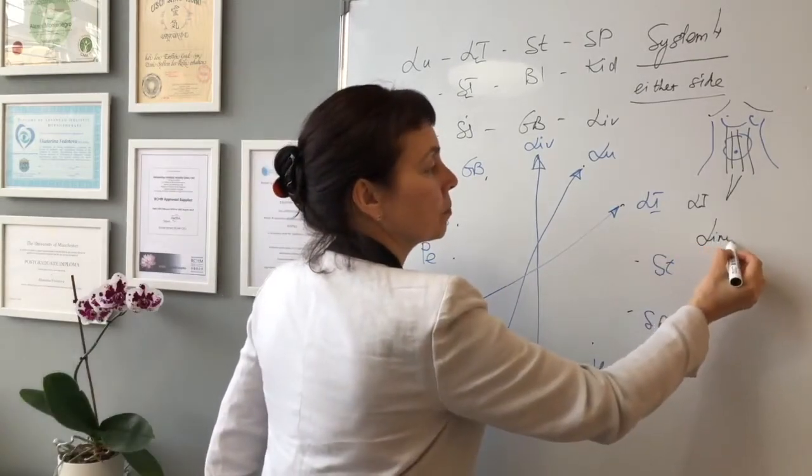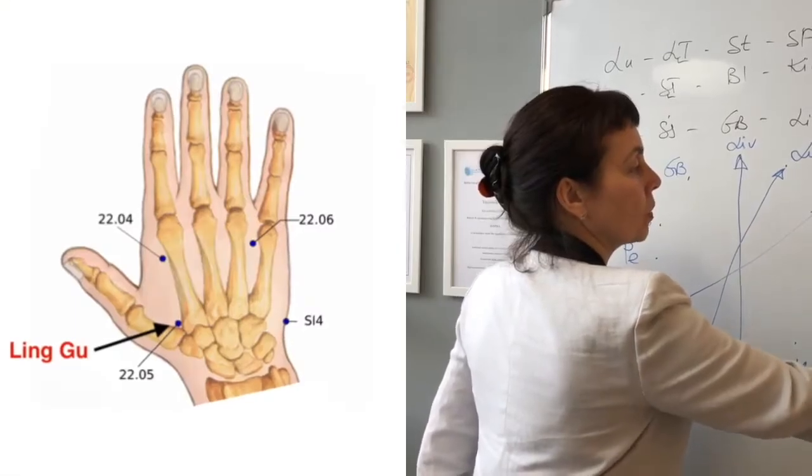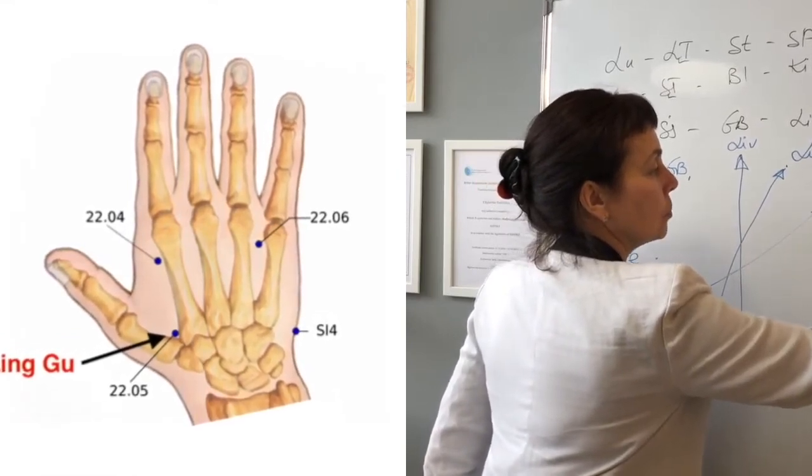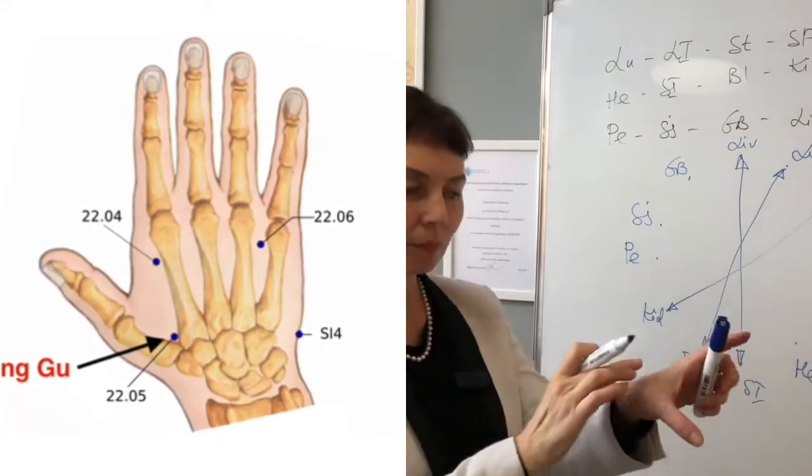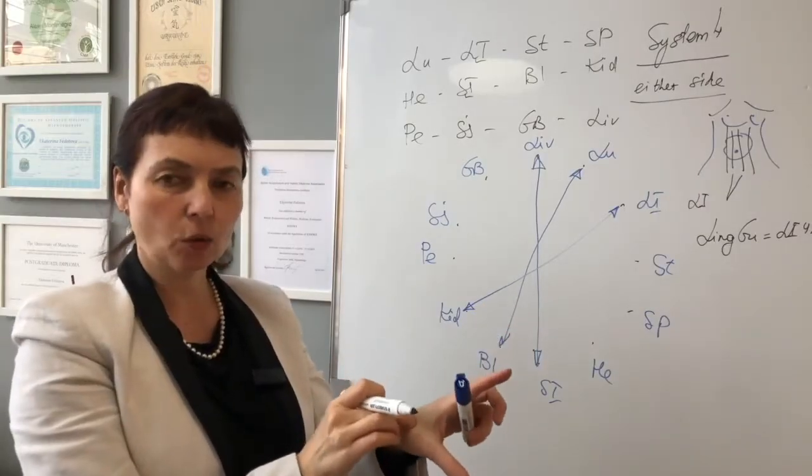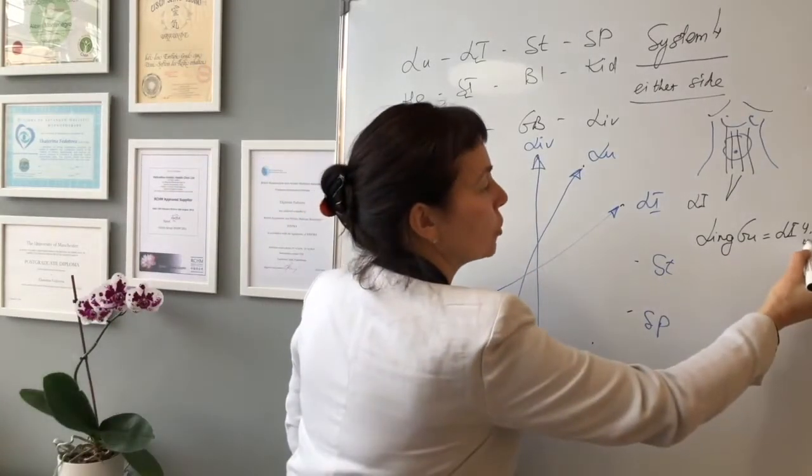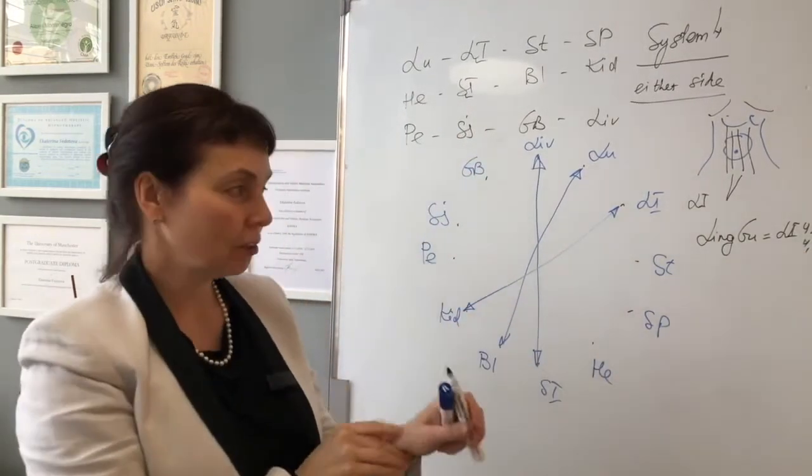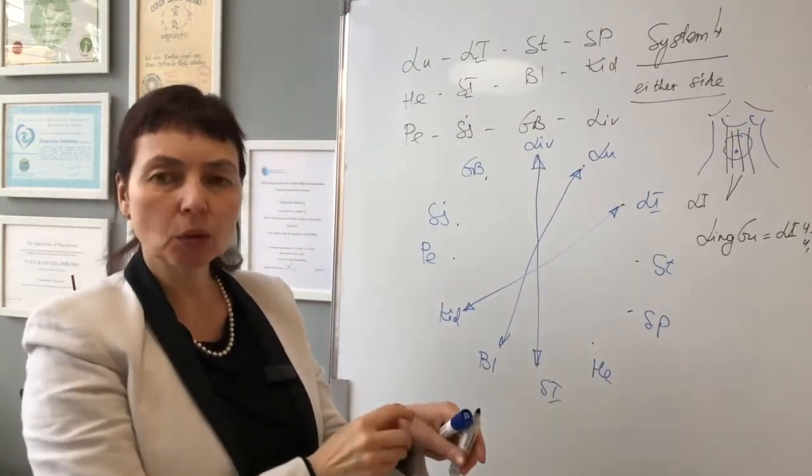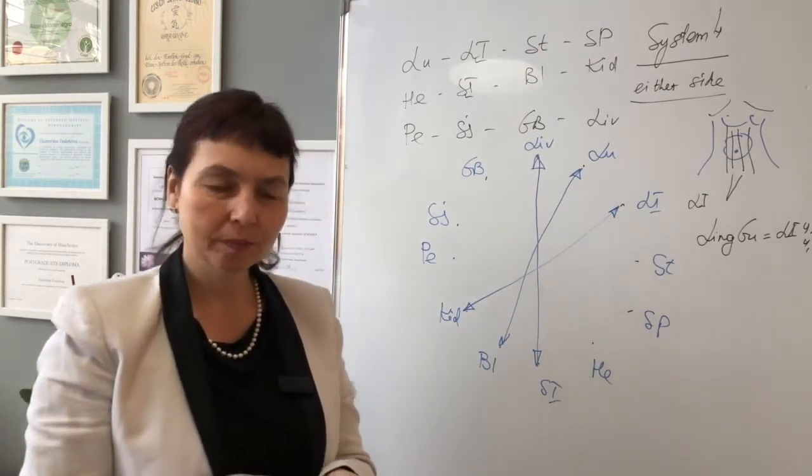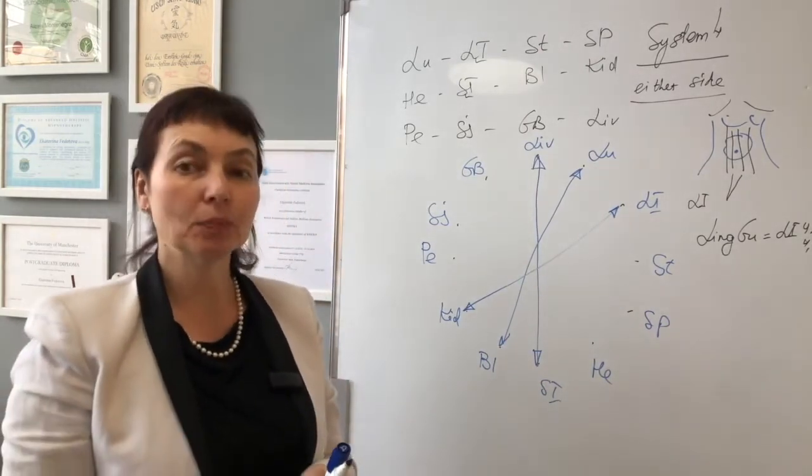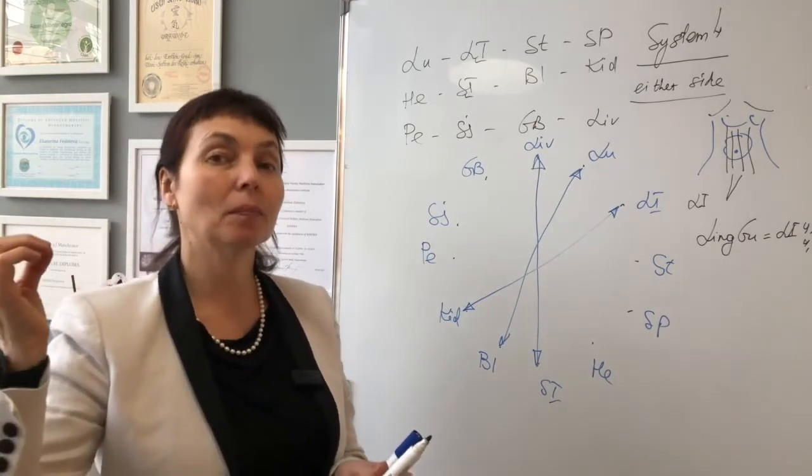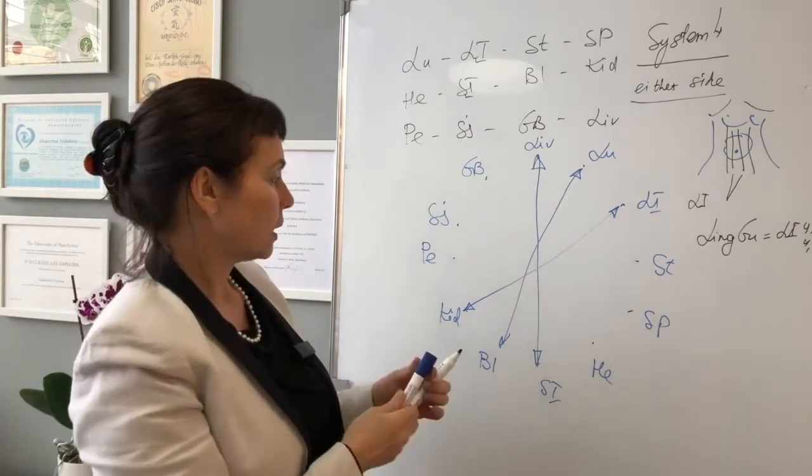Lingo, or large intestine 4.5, is slightly lower, I would say 4.4 towards large intestine 5. When we needle Lingo, we needle it towards the wrist, quite deep. If the pain is deep, the needling must be deep. Let's carry on.